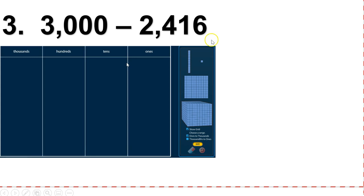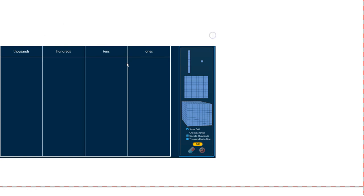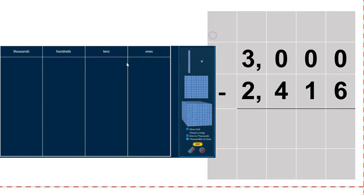Let's try one more together. Go ahead and write that number on your paper: three thousand minus two thousand, four hundred and sixty. We're going to write that on our grid paper. Pause your video and go ahead and try this one.